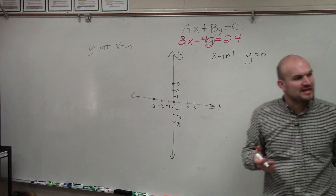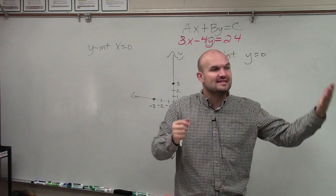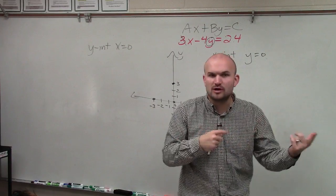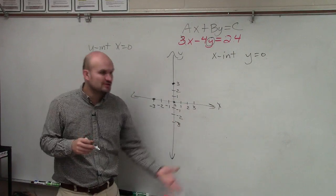That information is very important because we only need two points to create a line. So if I can identify the x and y intercepts, I have my two points. I don't need to worry about rewriting it in slope-intercept form, plotting the y-intercept, and using the slope.